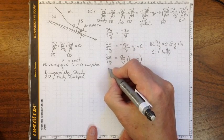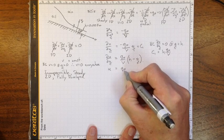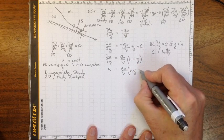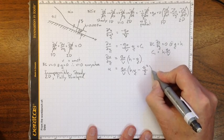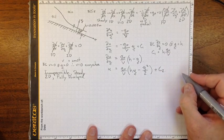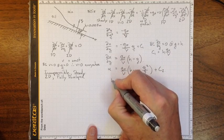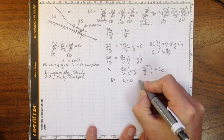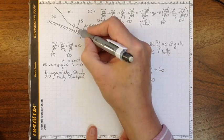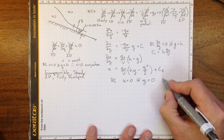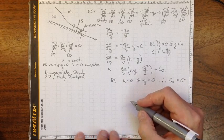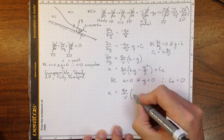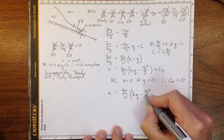Integrating again, we get u equal to (g_x/ν)·(h·y − y²/2) plus another constant c₂. We have another boundary condition: down at the plate there's no slip, so u equals zero at y equals zero. Substituting in, c₂ equals zero. We wind up with u equal to (g_x/ν)·(h·y − y²/2).